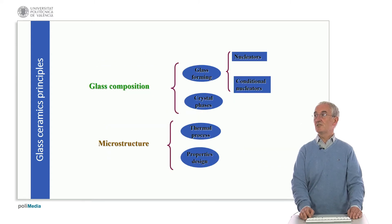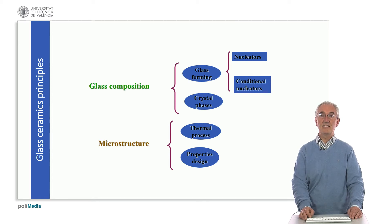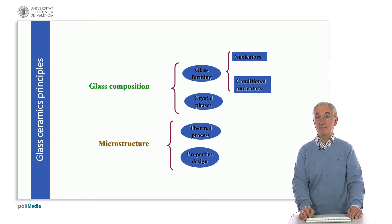The glass composition introduces nucleators for developing the matrix, and conditional nucleators which are related to the effect and the evolution of microstructure. The crystal phases are the critical elements — their nature, size, and distribution determine the adequate properties. Microstructure control is developed through very good thermal process understanding, design, and control for delivery.